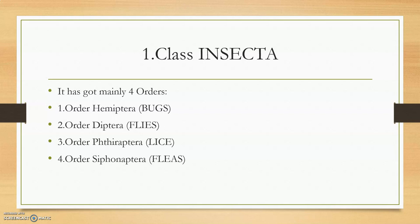In the local language (Malayalam) we call Hemiptera bugs 'Muta.' The next order is order Diptera, comprising winged flies — called 'Parani' locally. Order 3 is Thysanoptera — the lice. And in Order 4, Siphonaptera, we have the fleas, locally called 'Chillid.'